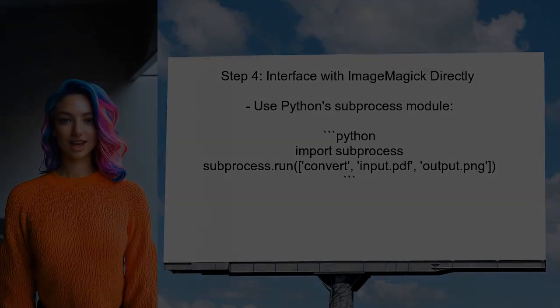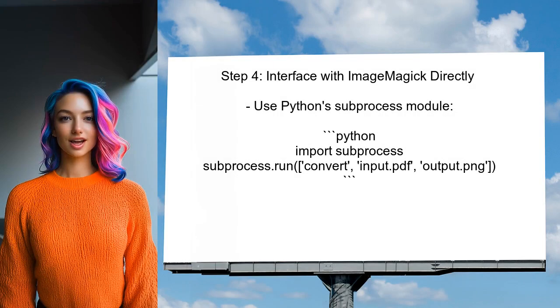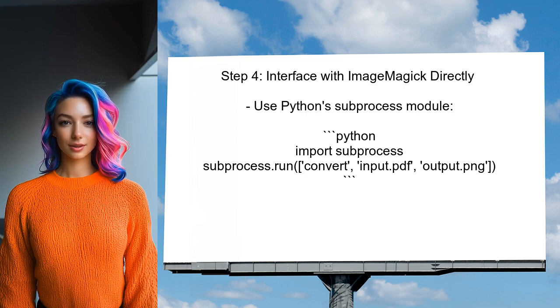Finally, if the user wants to interface directly with ImageMagick, they can use the subprocess module in Python. This allows them to run ImageMagick commands directly from their Python code, giving them more control over memory usage.